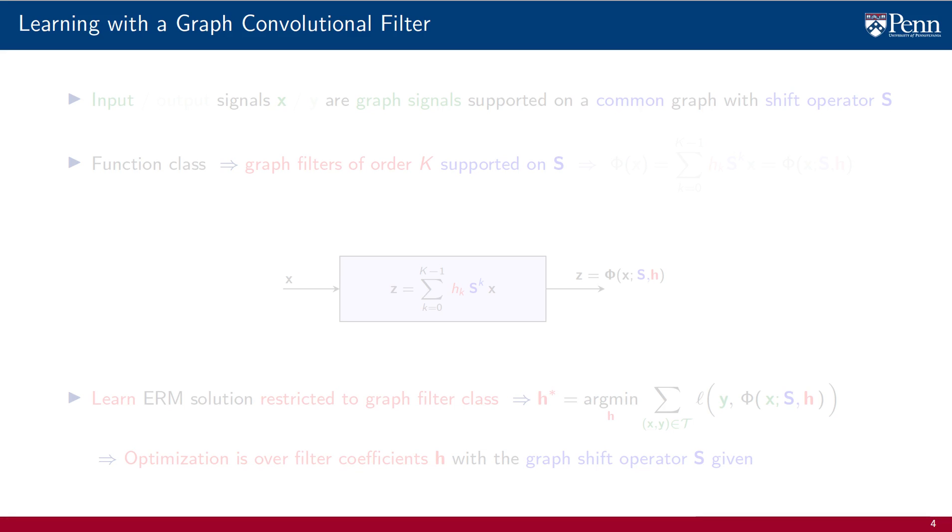Let us then describe a learning system with a convolutional graph filter. The input signals x are graph signals that are all of them supported on the same common graph with shift operator S. The same is true of output signals y. They are also graph signals supported on the same graph S, which is also the same graph that supports the input signals.